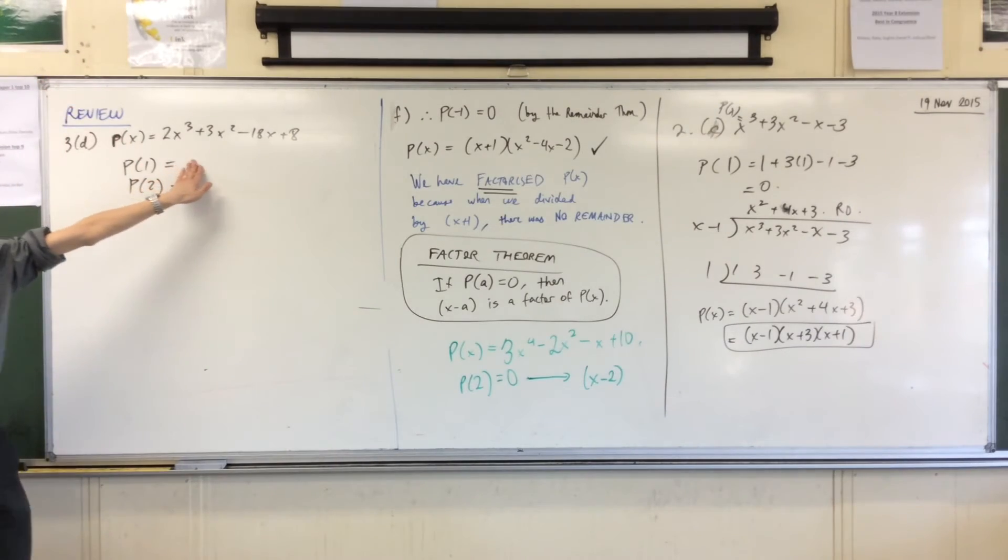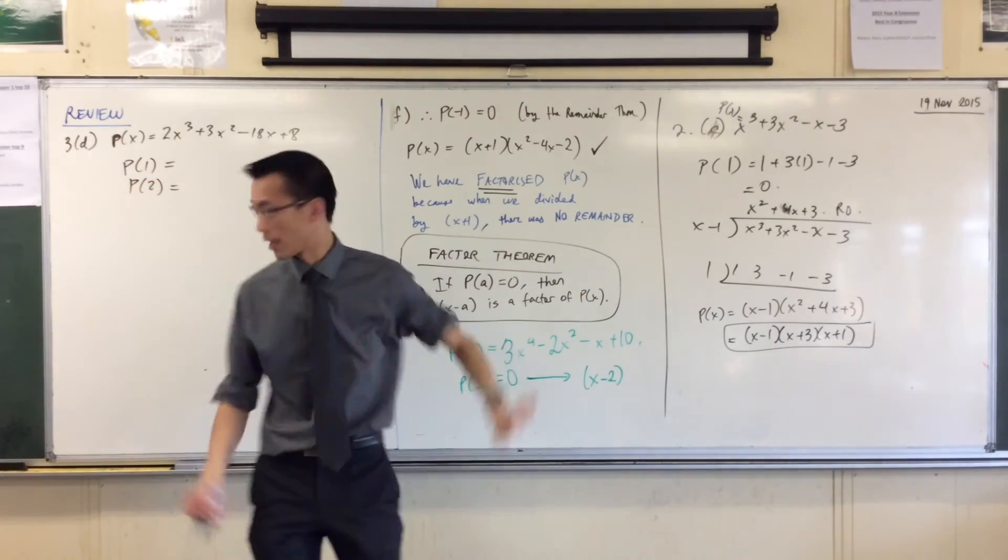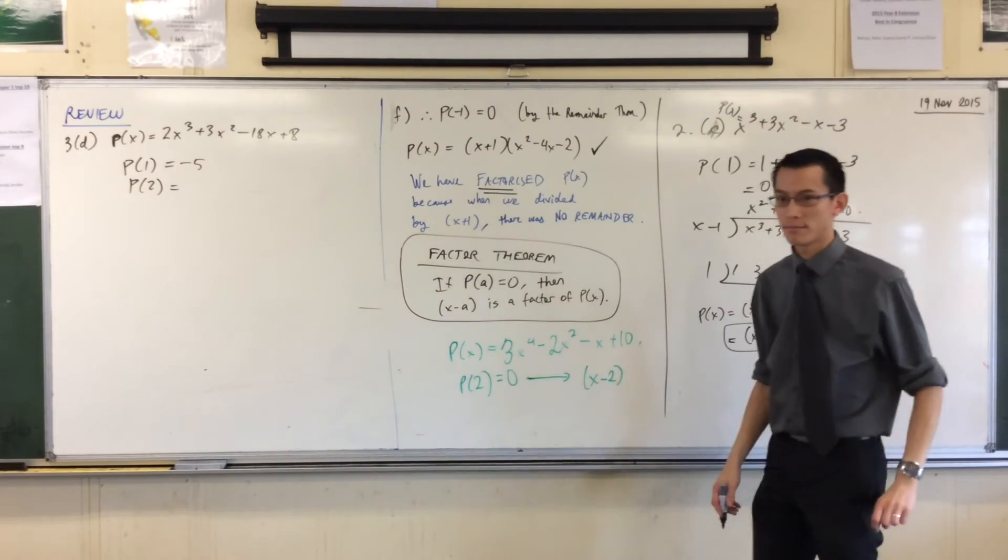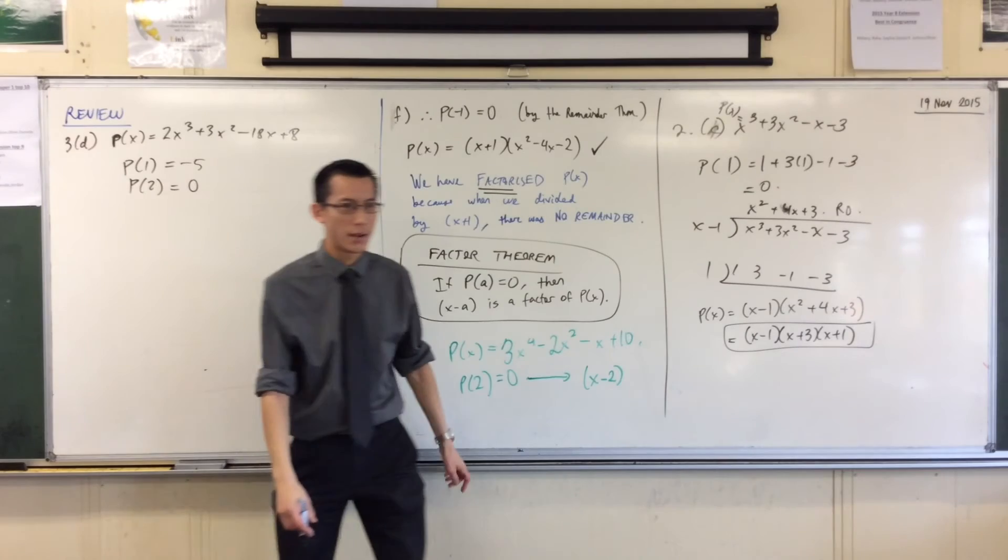As soon as someone has P of one, can they tell me? First person. Can you do five? Someone got P of two? Zero. Zero. Okay. Now, what have we done here?